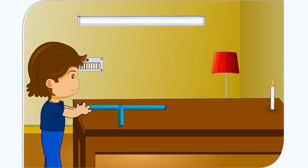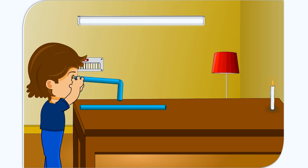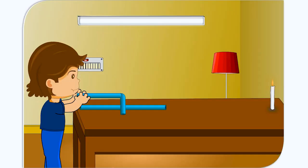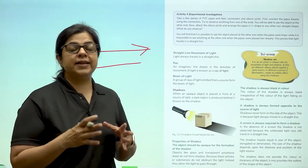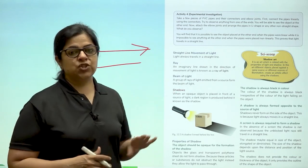Next, bend the rubber tube in the middle and try looking at the candle flame through it. You are not able to see it. You can thus conclude that light travels in a straight line. This is also called the rectilinear movement of light.